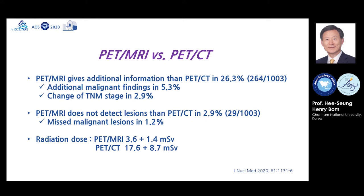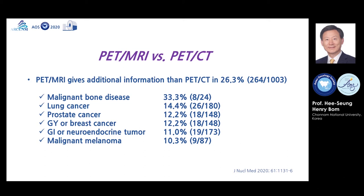Missed malignant regions with PET-MRI account for 1.2%. The radiation dose of PET-MRI is approximately 3.6 mSv, while the radiation dose of PET-CT is 17.6 mSv. PET-MRI provides additional information in malignant bone disease, lung cancer, prostate cancer, gynecologic or breast cancer, gastrointestinal or neuroendocrine tumors, and malignant melanoma.